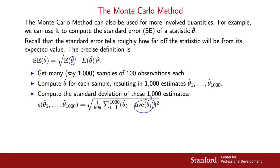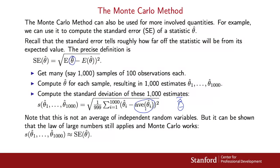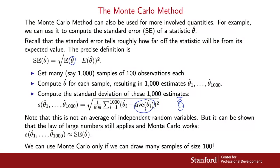The average of these estimates is theta-hat-bar. This is not an average of independent random variables because theta-hat-bar appears in each term, making the whole thing dependent. But the Monte Carlo method still works — this quantity is roughly equal to the standard error. The caveat is that this method will only work if we can draw many samples of size 100. In other words, simulation works if I can sample as much as I wish.